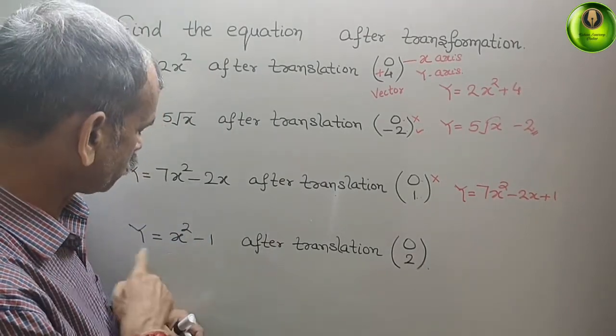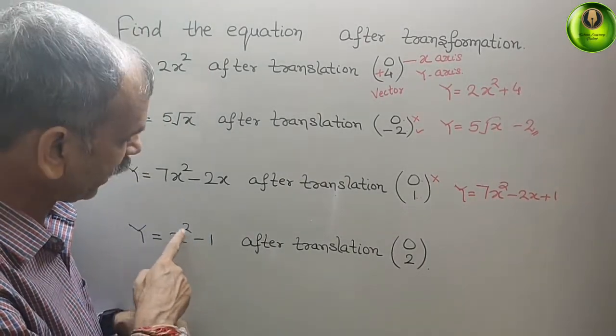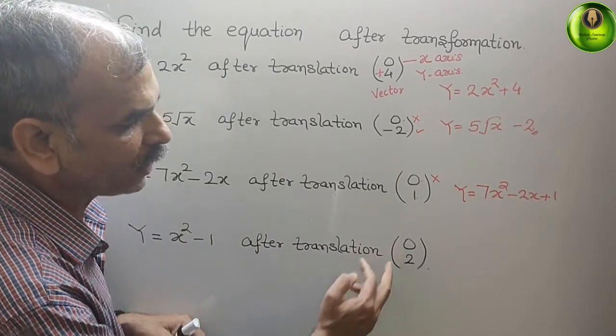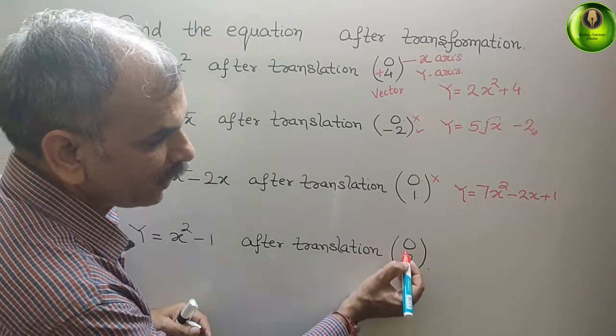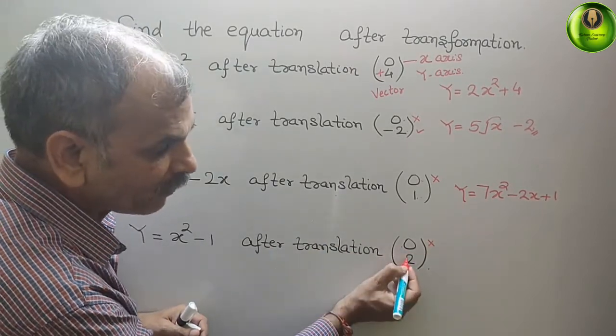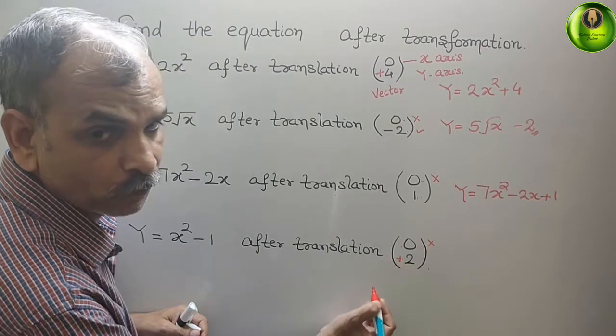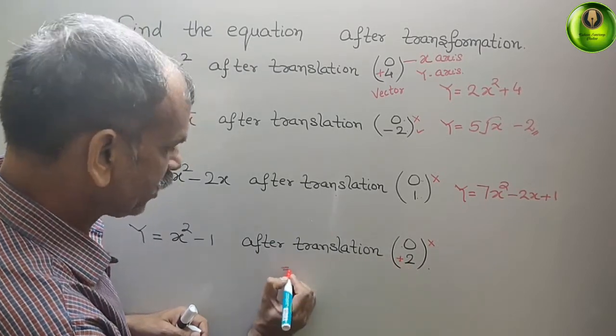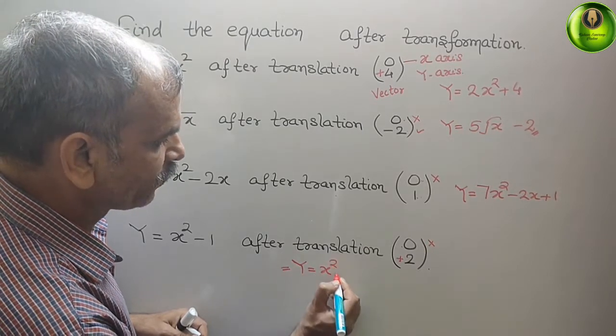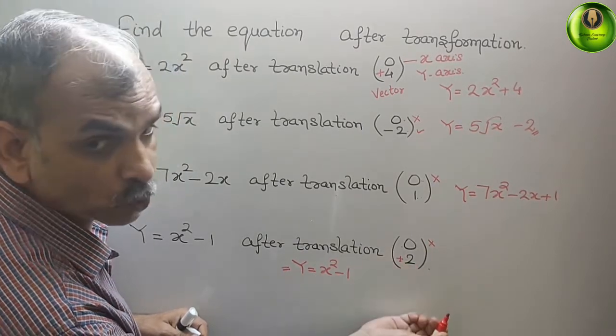Now, comes to your last. y = x² - 1 after translation (0, 2). So in x-axis, you can see there is no shifting. But in y-axis, it is plus 2. Therefore, here you will get y = x² - 1 + 2.